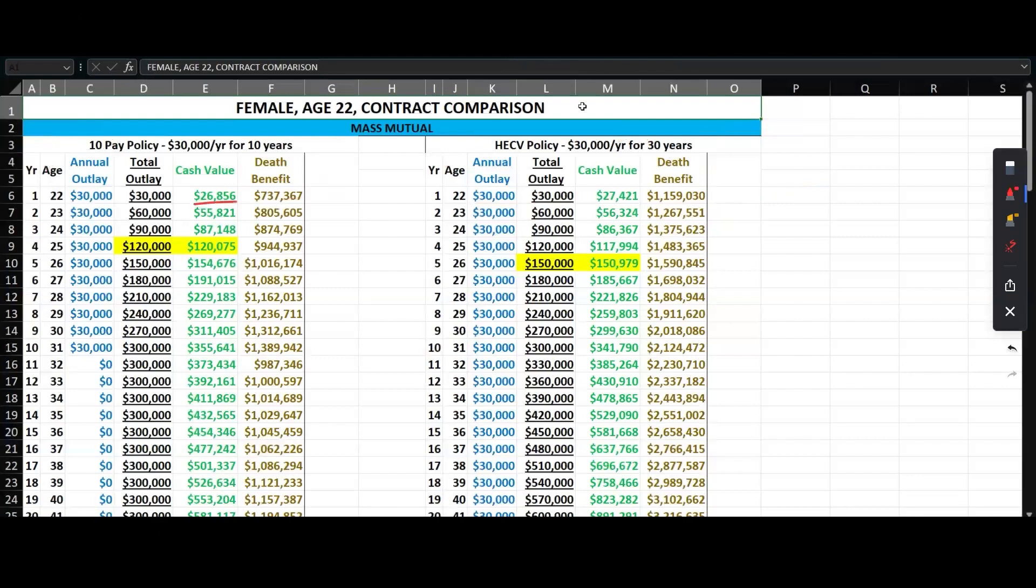With all things being equal from a cash value design standpoint, what else do we see? First year similar but the high early does have more, and it has more for how many years? Two years. By year 3, the 10 pay looks stronger. The break-even is a year earlier. If we look at year 10, you've paid $300,000 into both, and what's the difference there in performance? About $14,000.